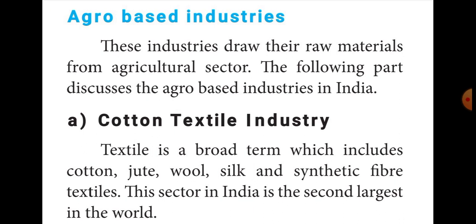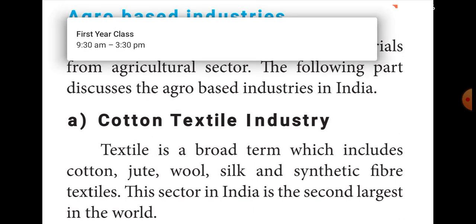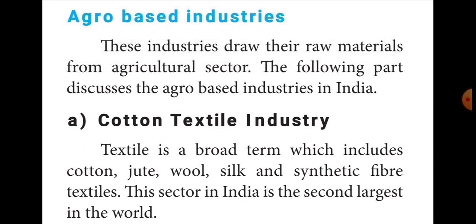Agro-based industries draw their raw materials from the agricultural sector. The important agro-based industries in India are: cotton textile industry, jute industry, silk industry, and sugar industry. The first important agro-based industry is the cotton textile industry.